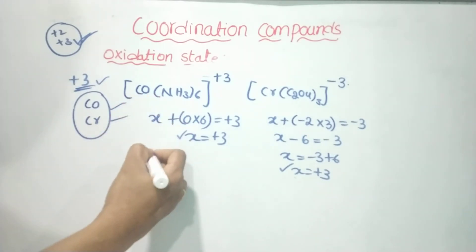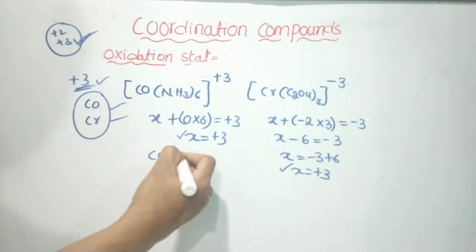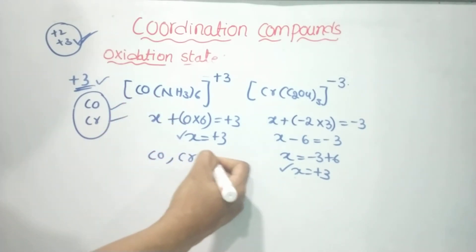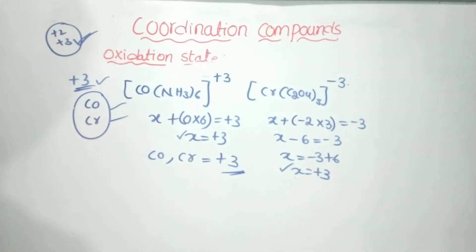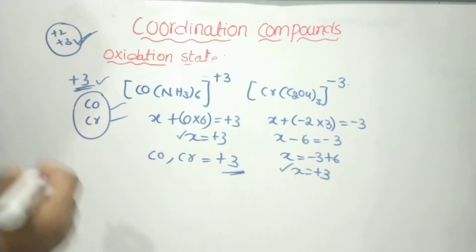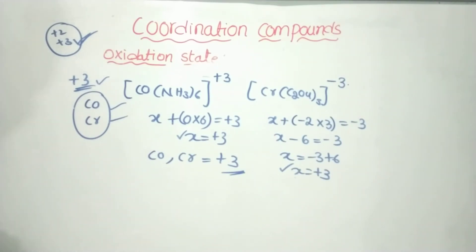So both cobalt and chromium have plus 3 oxidation states. Next, we look at bridging ligands and how to determine their oxidation states.